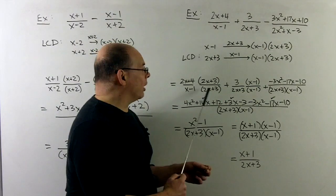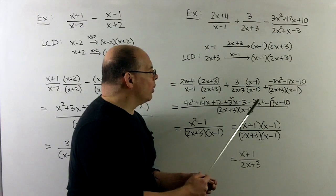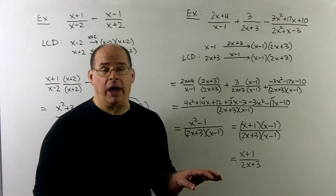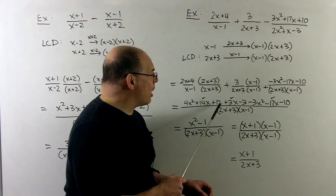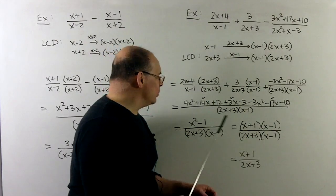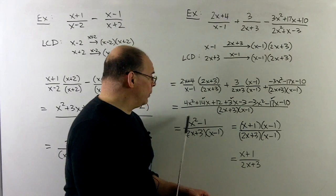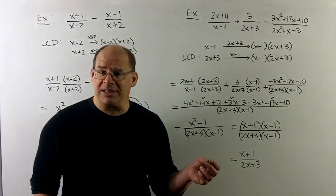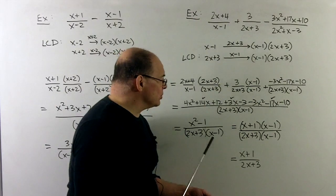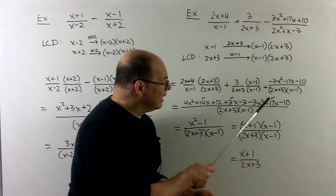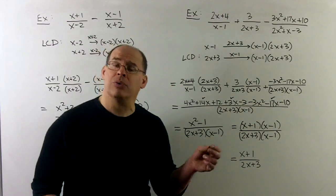FOIL the first term, distribute the second. Combining everything: all the x terms cancel, the x² terms give just x², and the numerical part gives 12 minus 3 minus 10 = minus 1, so the numerator is x² minus 1. That factors as a difference of two squares: (x+1)(x-1). The (x-1) factors cancel, leaving x plus 1 over 2x plus 3 as the final answer.